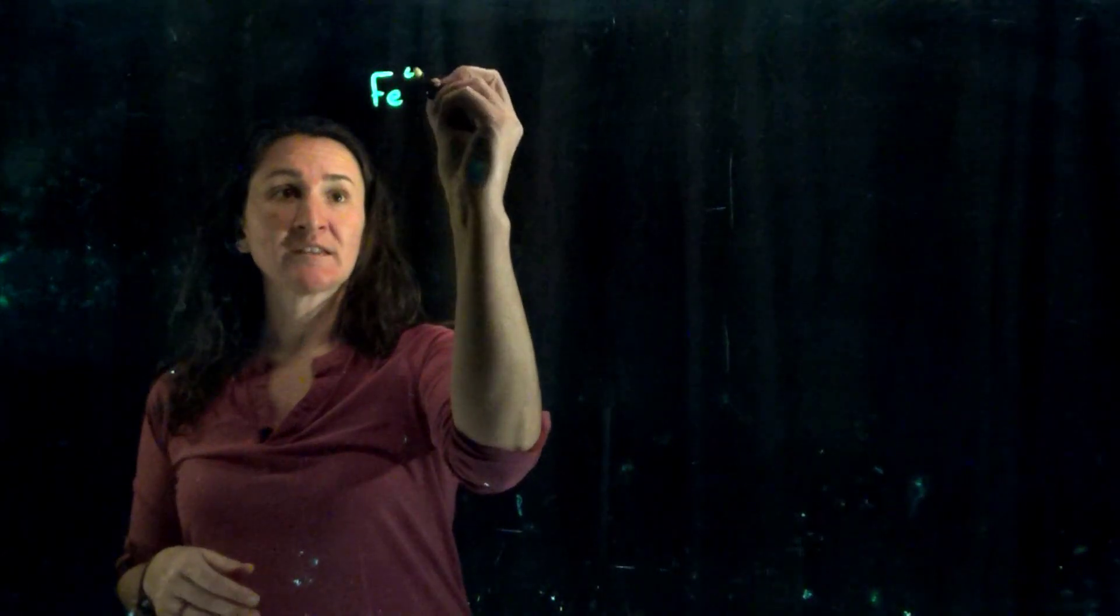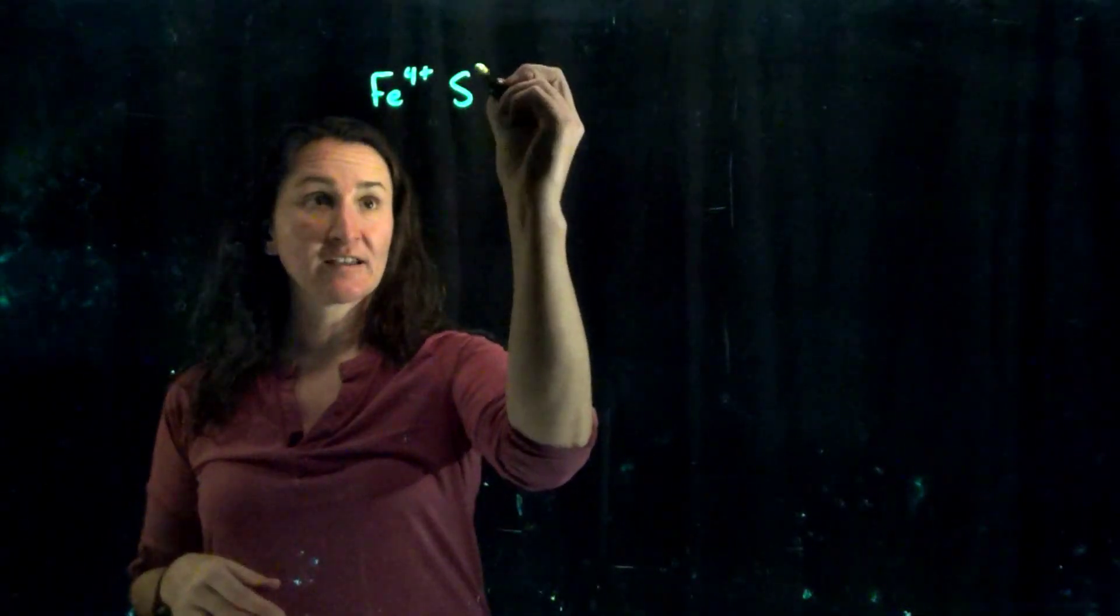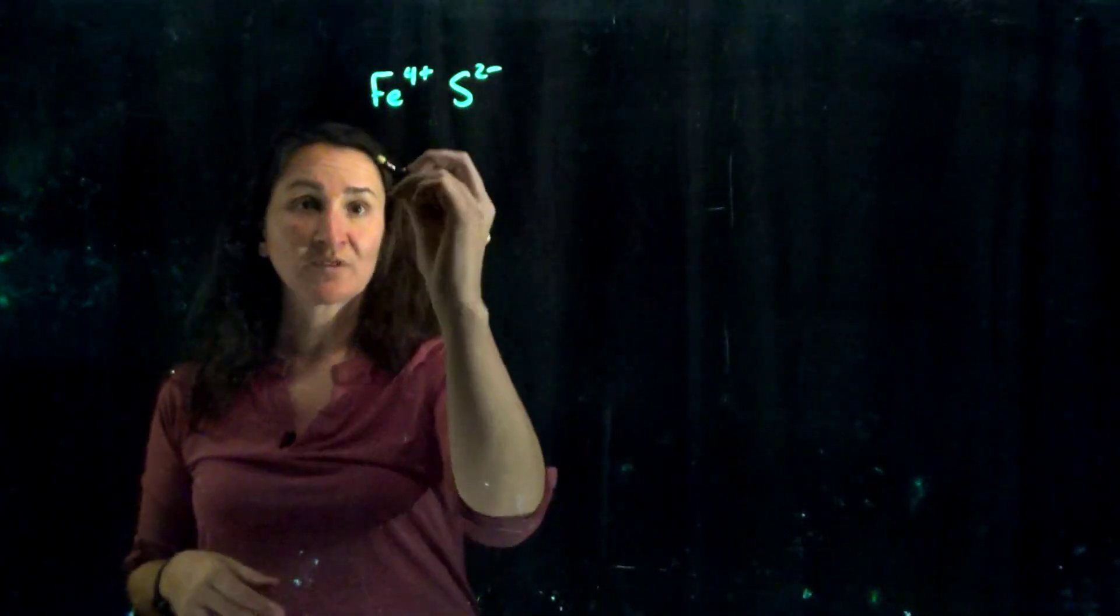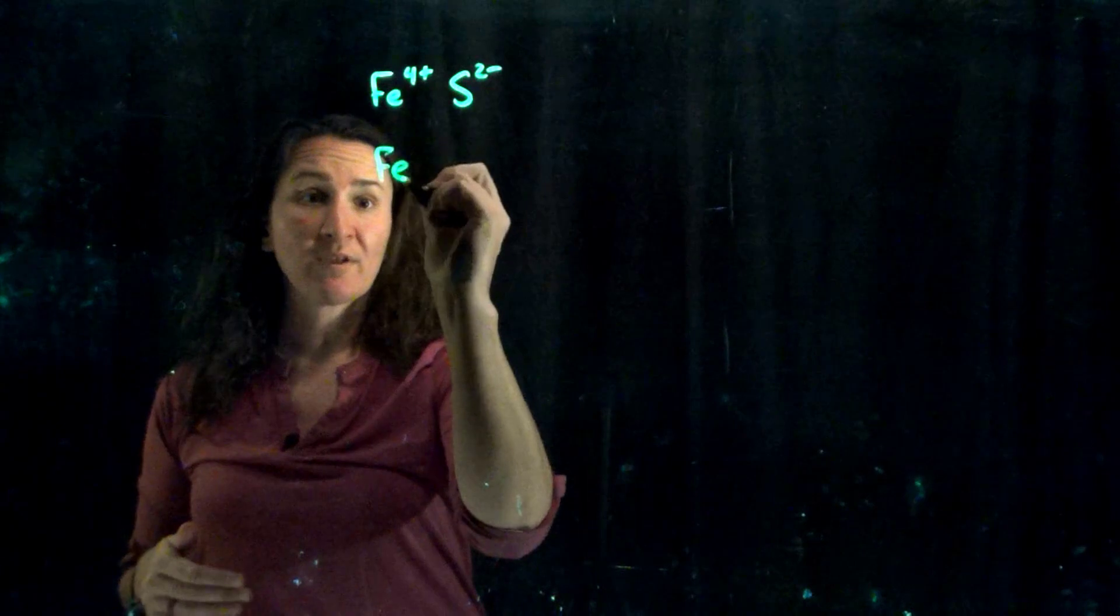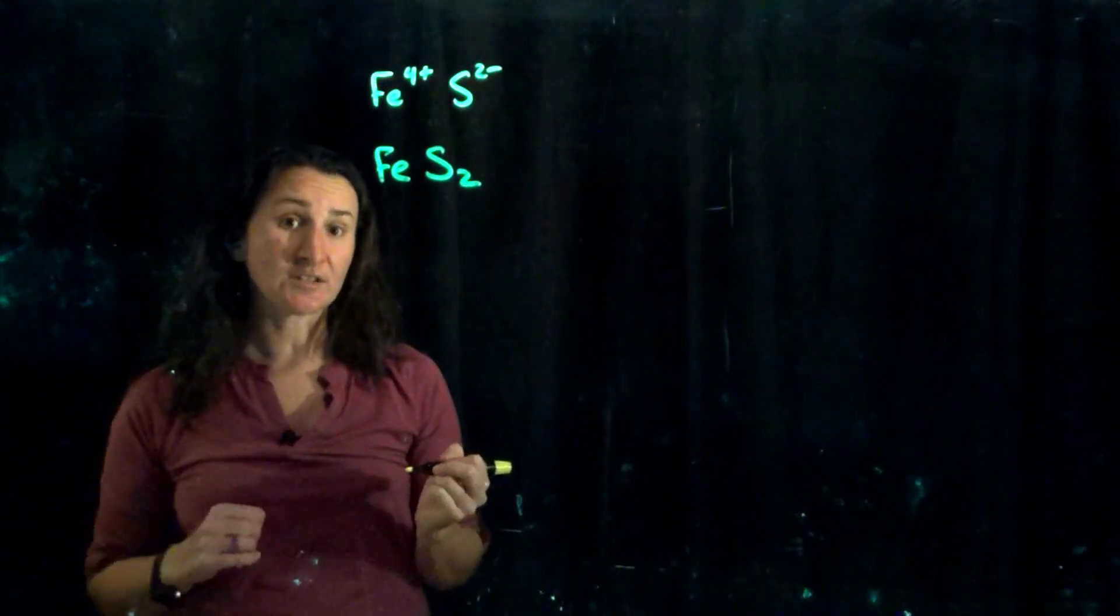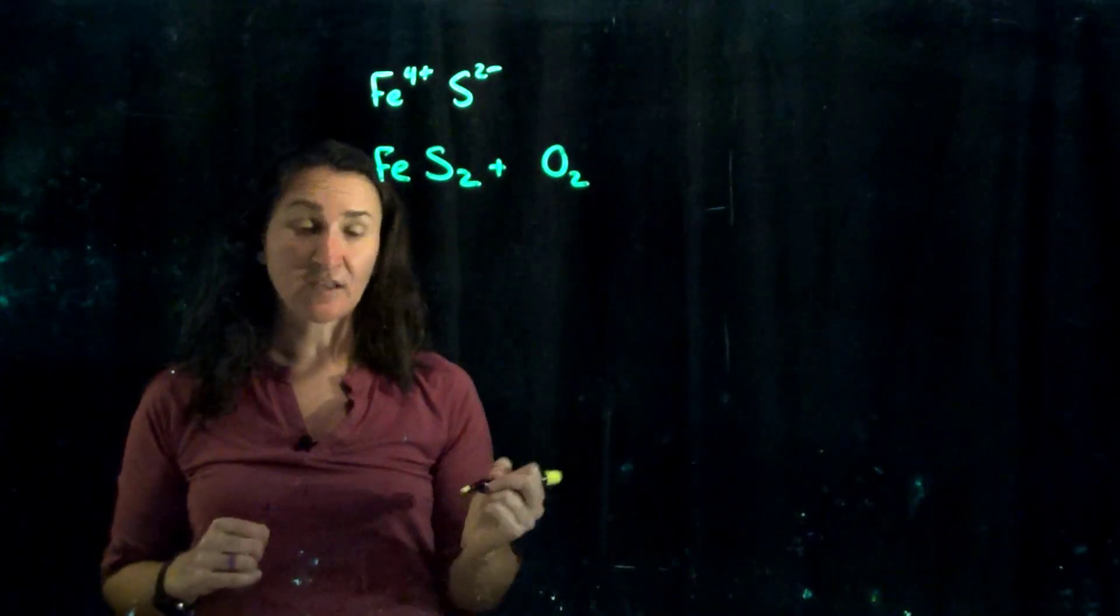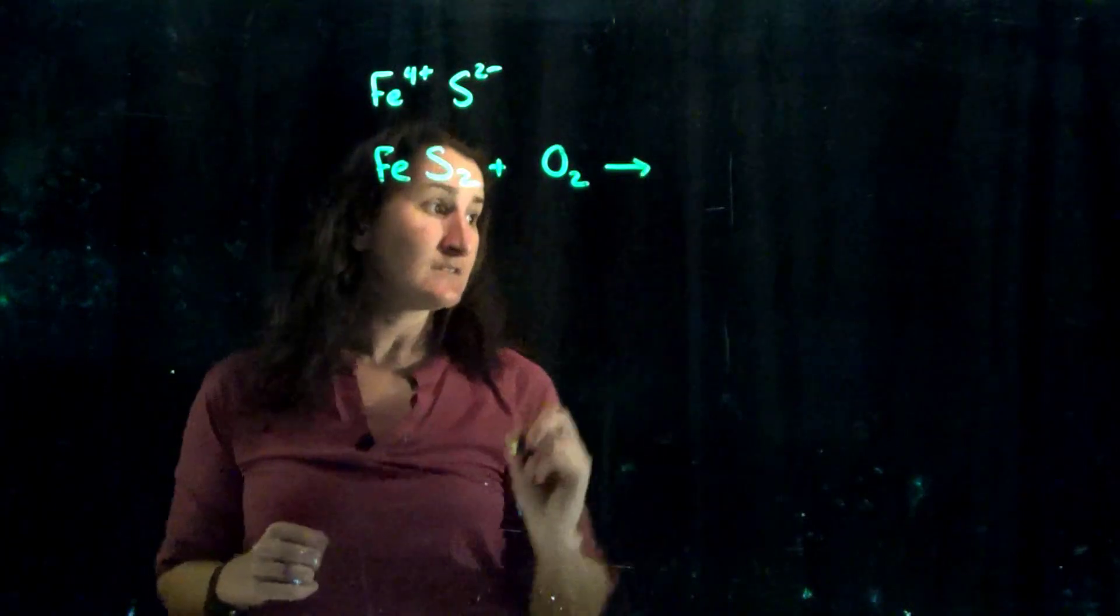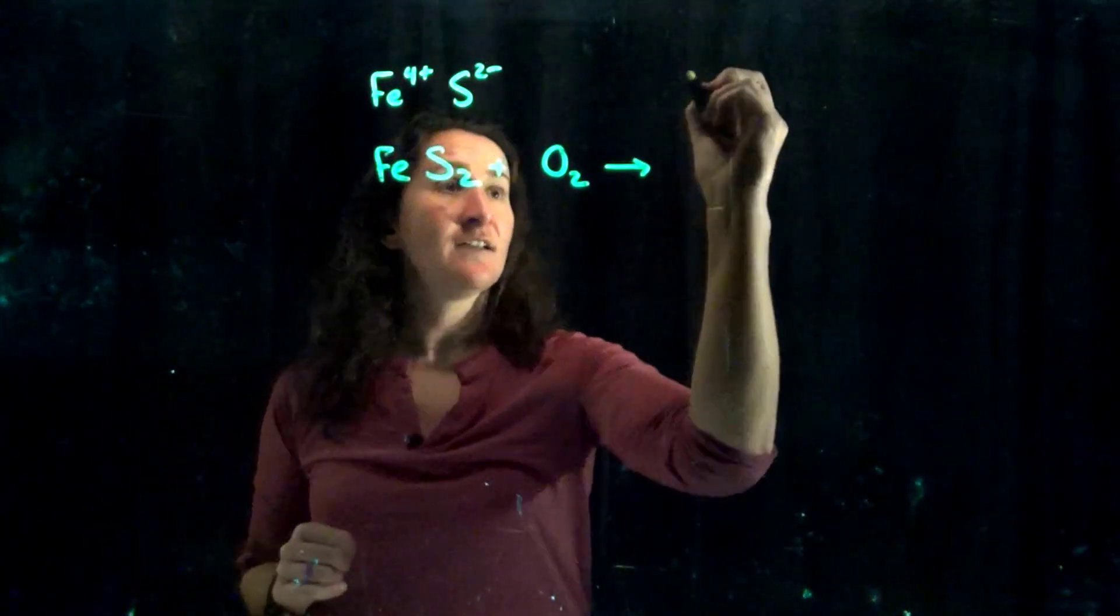To begin with, our first compound is iron four sulfide. Remember iron four is Fe4+ with sulfur, and we find that on the periodic table S2-, which means this compound cross the charges, reduce them, we end up with FeS2, iron four sulfide.